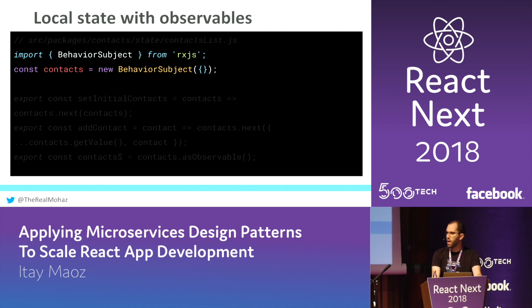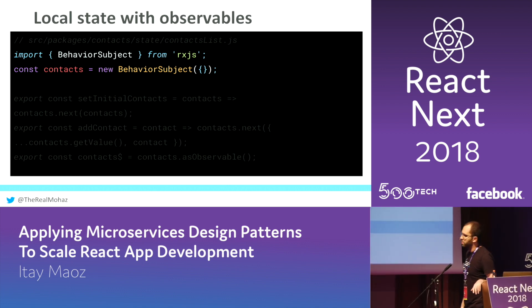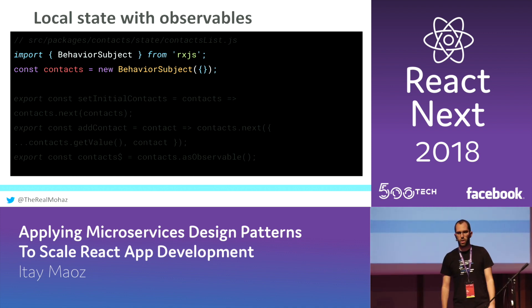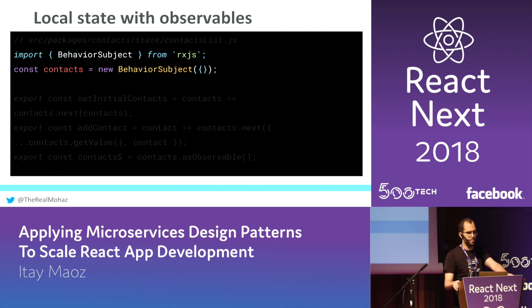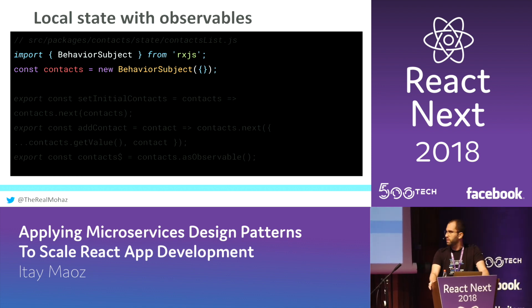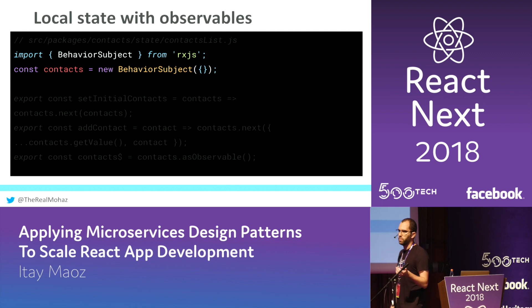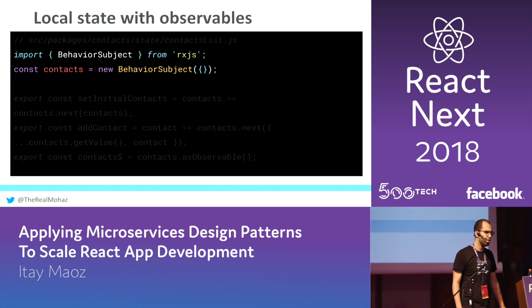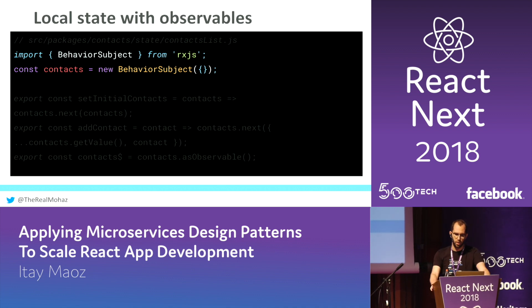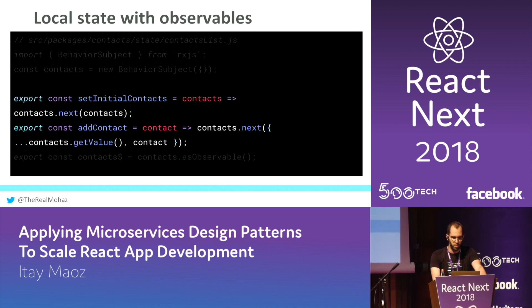You also need to remember to provide functions to alter the state. You don't want anyone accessing your state and mutating it in any way they want — you want to control how your state is being mutated. For exposing local state, we use a BehaviorSubject from RxJS. A BehaviorSubject is basically an object which contains a piece of state — in this case an empty object — and it can expose this state and also allows subscribing to future updates.